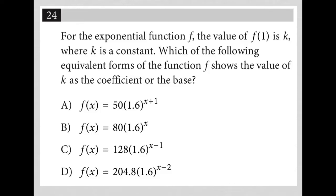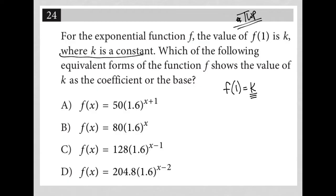This question says for the exponential function f, the value of f(1) is k — I'll write that down: f(1) = k. I'm treating this like a translate word problem, writing down any relevant quantitative information so I don't have to reread it later. k is a constant, not a variable. Which of the following equivalent forms of the function f shows the value of k as the coefficient or the base?